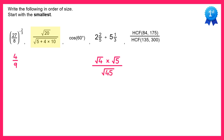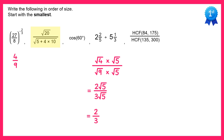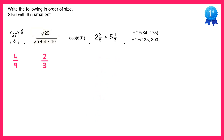Square root 45 can also be simplified — it's the same as square root 9 times square root 5. Looking at the top, square root 4 is just 2, so that's 2 root 5 on the top. On the bottom square root 9 is 3, so we have 3 root 5 on the bottom. These square root 5s would now cancel, leaving the answer 2 thirds.